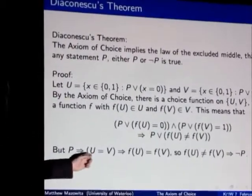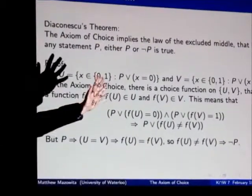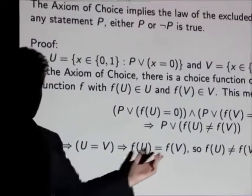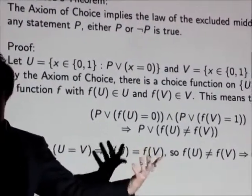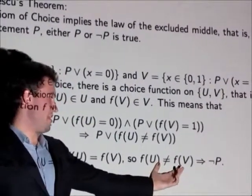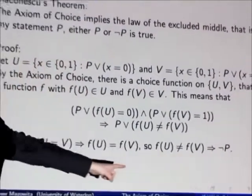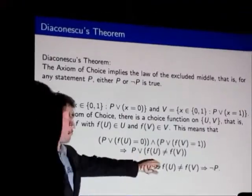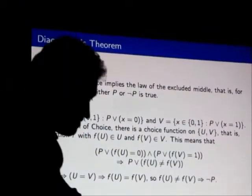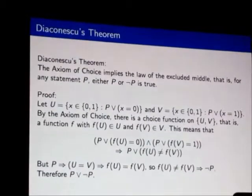Then, if P is true, then U equals V, because U and V are both just {0,1}. And if U equals V, then f(U) has to equal f(V), because they're the same thing. So f(U) being not the same as f(V) implies the negation of P. So I can just go from P or f(U) ≠ f(V) to P or not P. And I'm done.